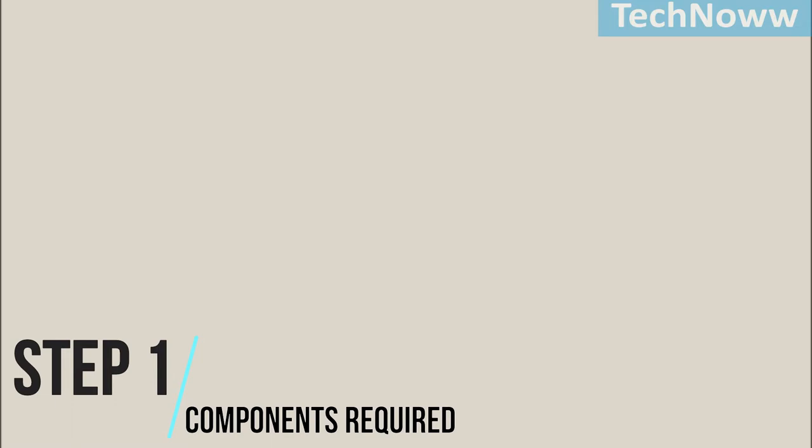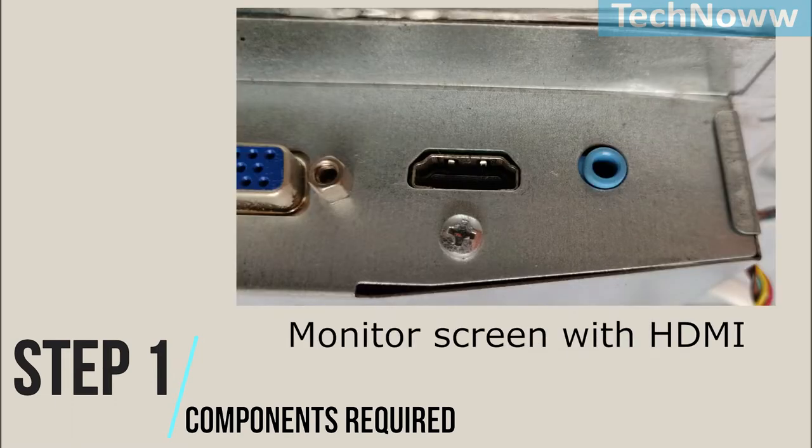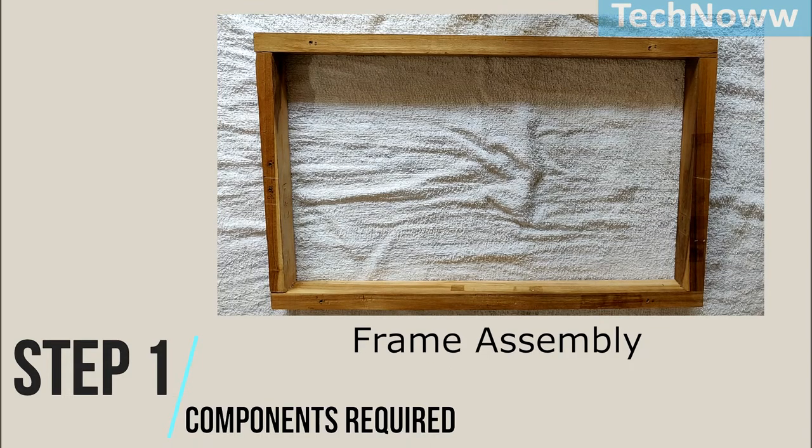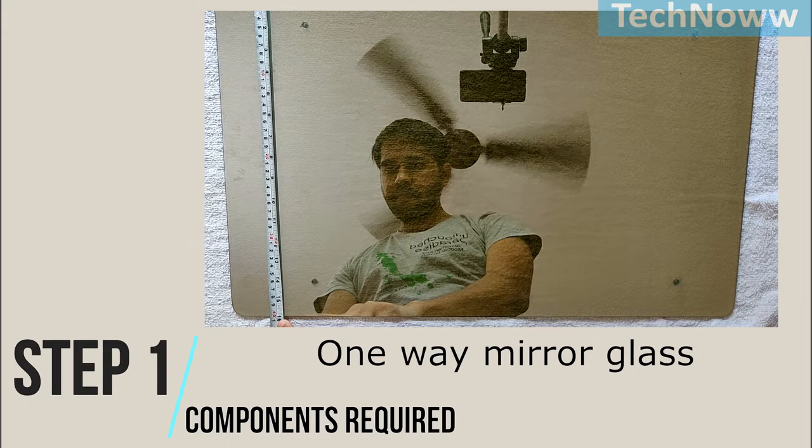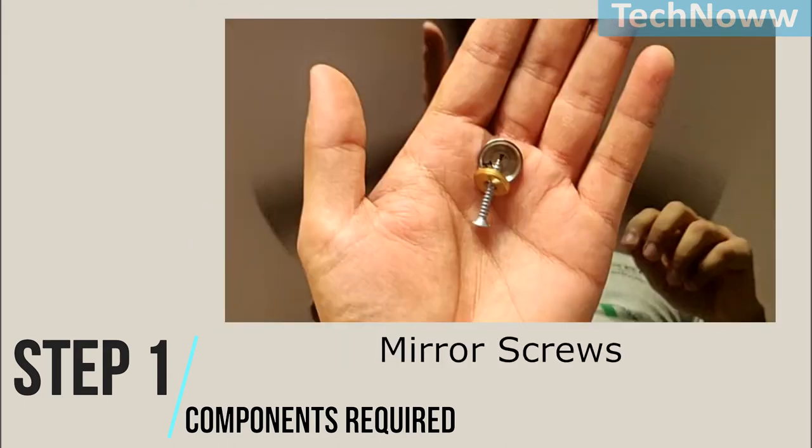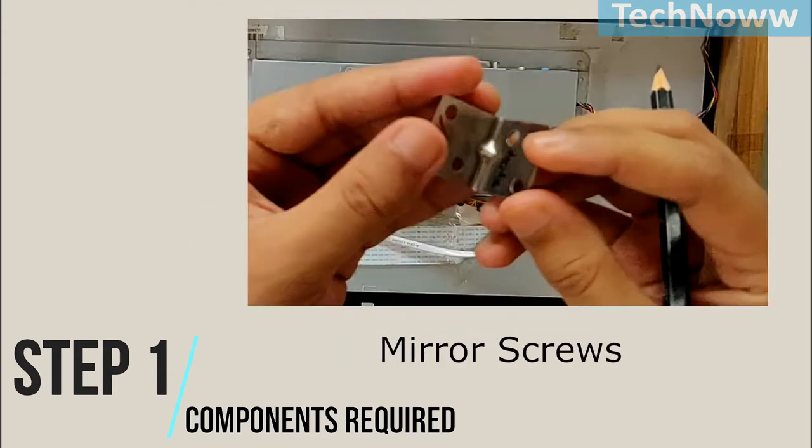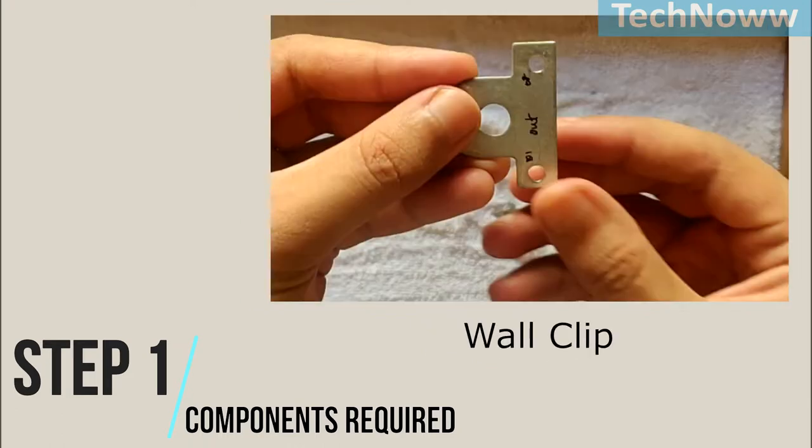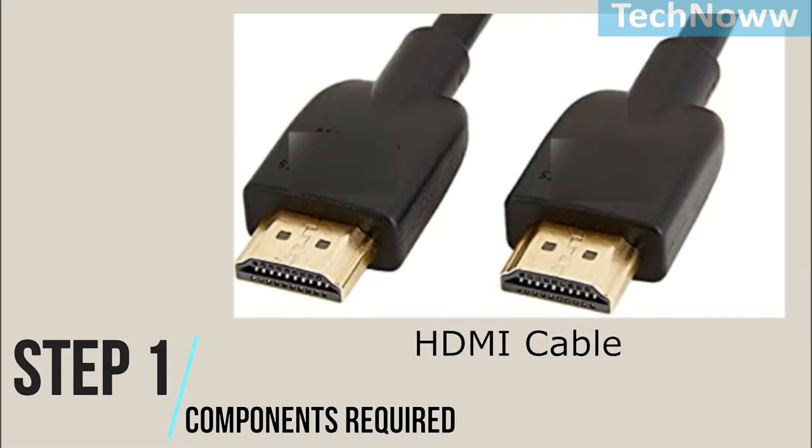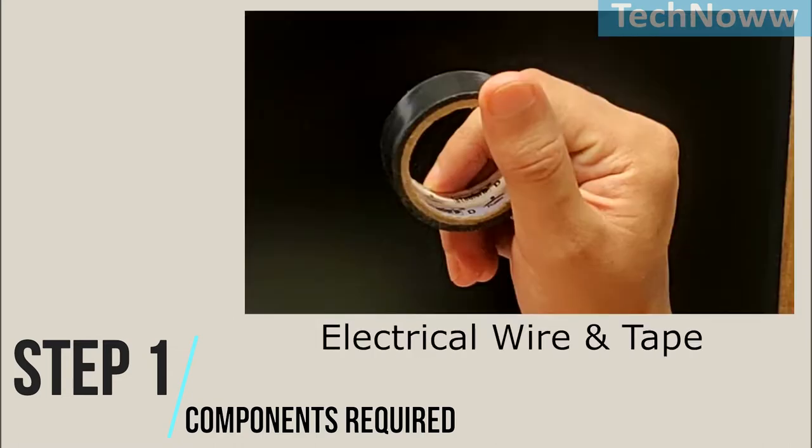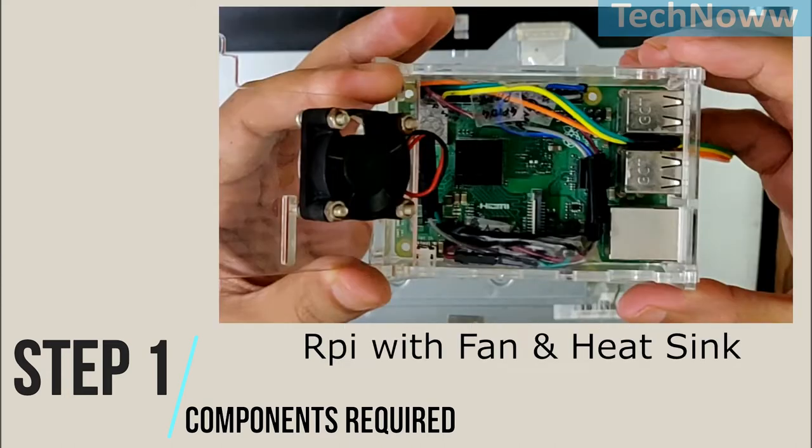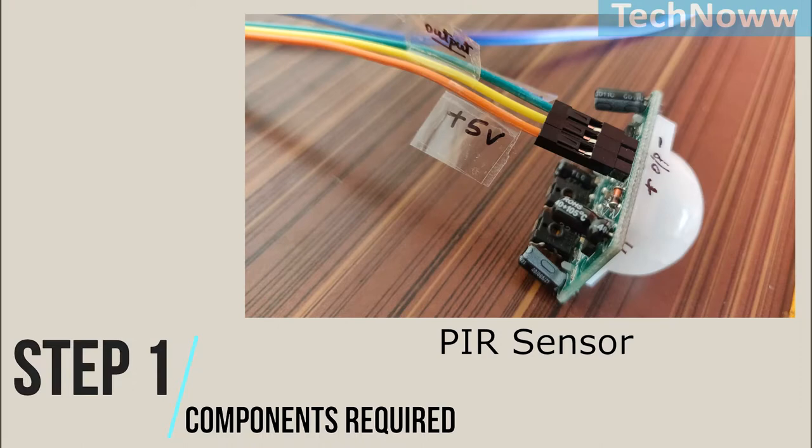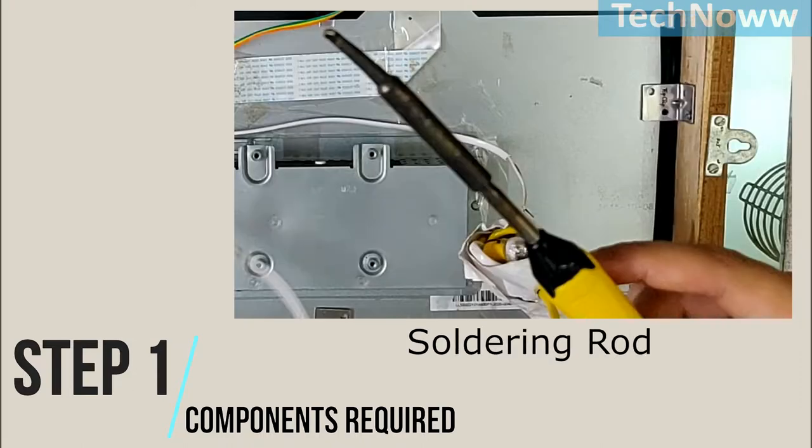Step 1: Components required. Monitor screen with HDMI port, frame assembly, one-way mirror glass, mirror screws, L-clamps, wall clip, HDMI cable, electrical wire and tape, Raspberry Pi with fan and heat sink, PIR sensor for Raspberry Pi and soldering rod.